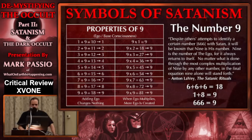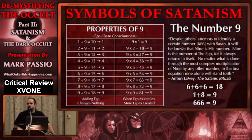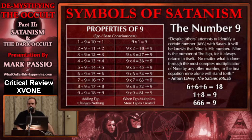Let's look at this chart. One plus nine is ten; one plus zero is one — we started with one, we're back to one. Two plus nine is eleven; one plus one is two — started with two, back to two. It doesn't matter what number you do this with. Adding nine always returns to itself. In numerical symbolism known as gematria, adding nine is like adding zero — no value is added. And what does nine represent? LaVey just told you: it represents the ego. When you add the ego into anything, no value is added, no increase occurs. Ego changes nothing.